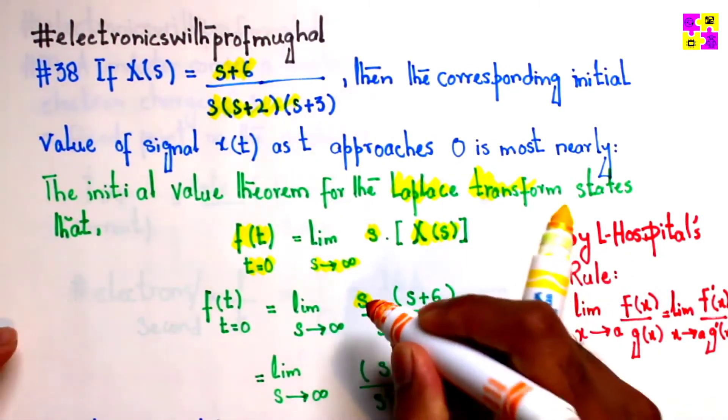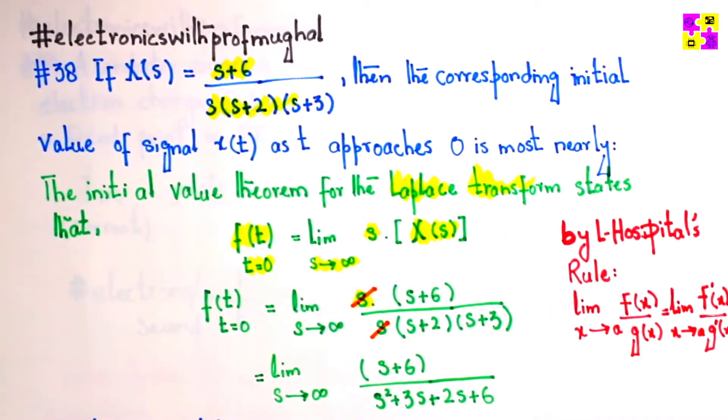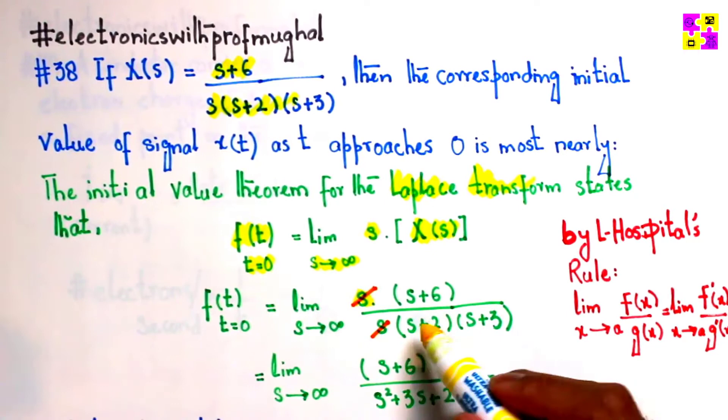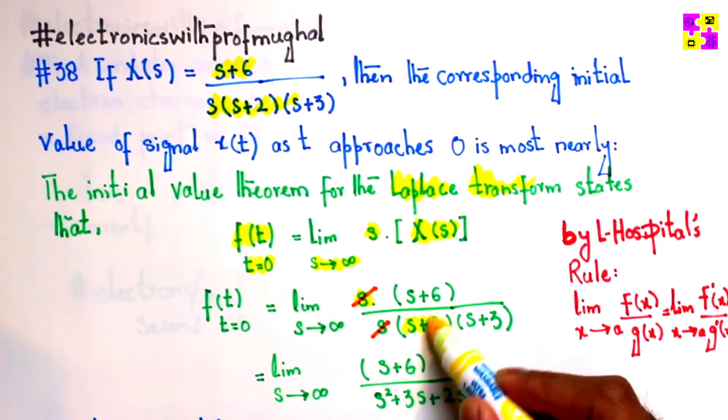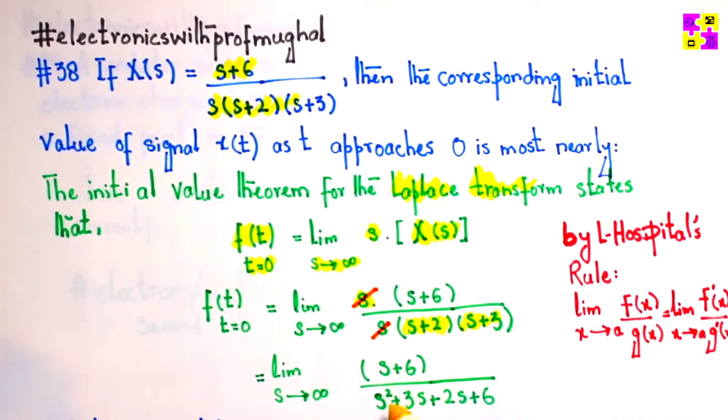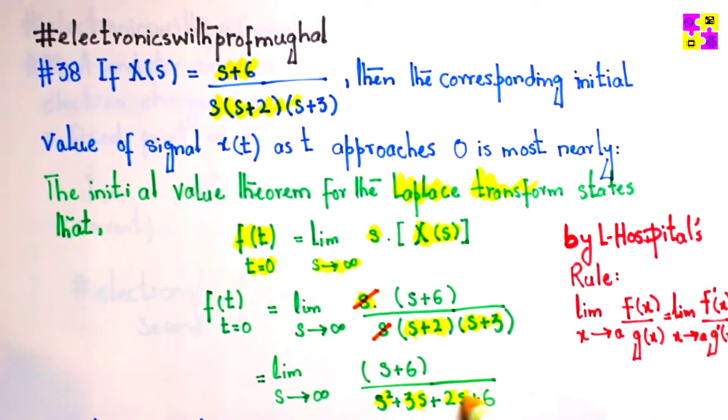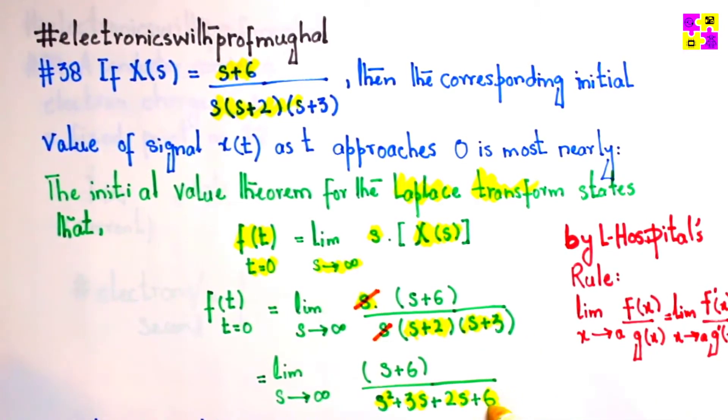Notice here, this s can simply be canceled out with this s, and I can take the product of these two terms. s times s is s squared, s times 3 is 3s, 2 times s is 2s, and 2 times 3 is 6.